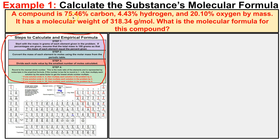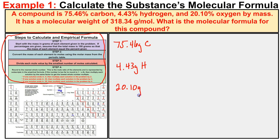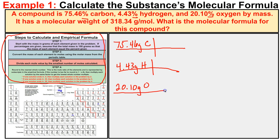The first step is to assume that we have a 100 gram sample of this compound. If so, then we have 75.46 grams of carbon, 4.43 grams of hydrogen, and 20.10 grams of oxygen. So we assume a 100 gram sample and these percentages get turned into grams. Next, we need to convert the grams to moles using the periodic table of elements.